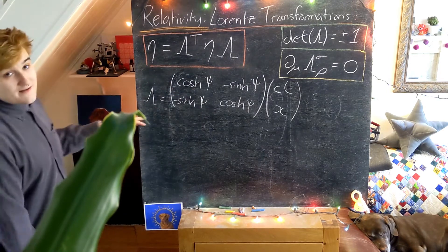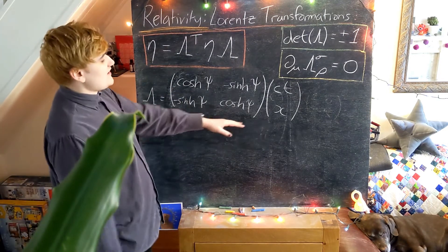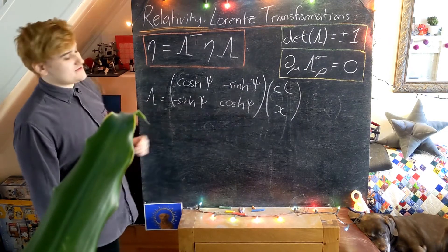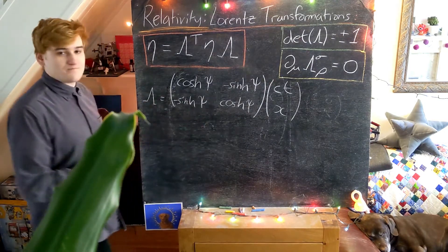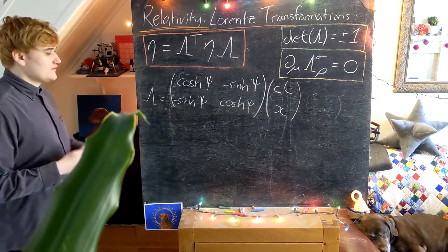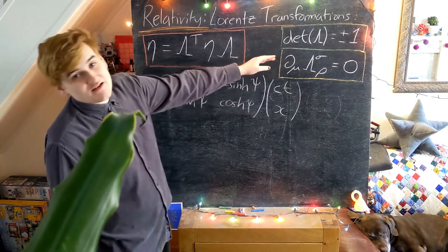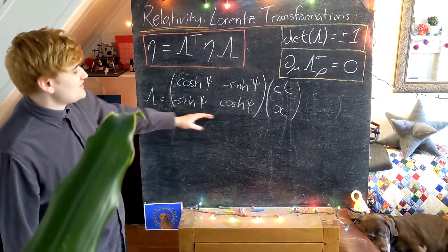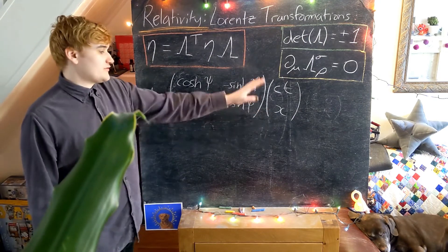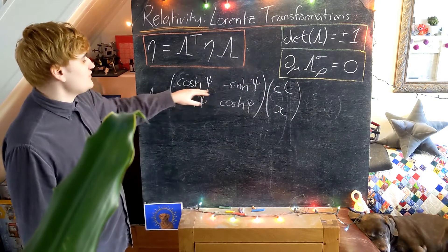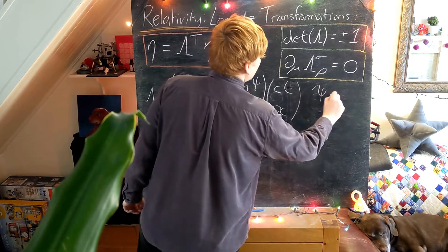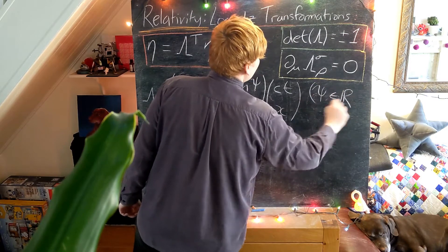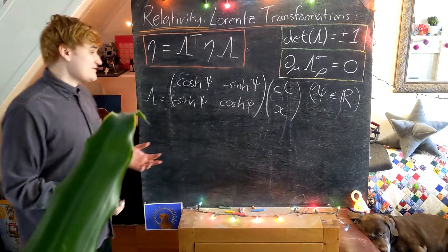But before we do that let's just first of all check whether or not this actually is a Lorentz transformation. And then once we know it is a Lorentz transformation we can start interpreting it physically. So immediately we can realize this condition. Our matrix doesn't in any way depend on the coordinates, just this new parameter which I've introduced.